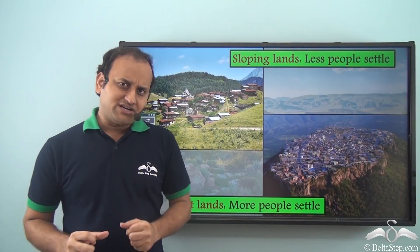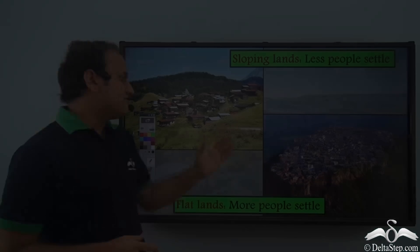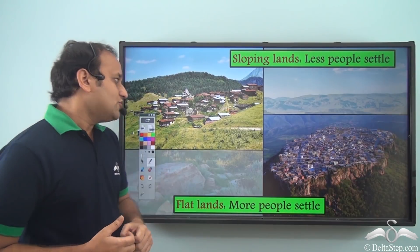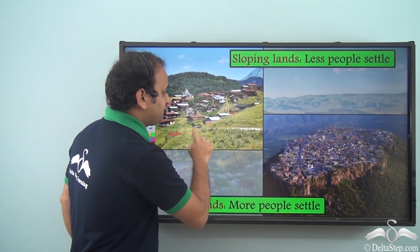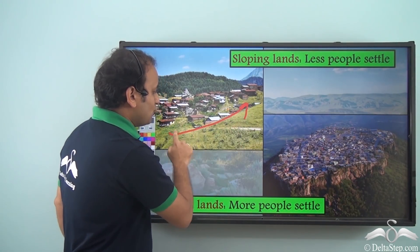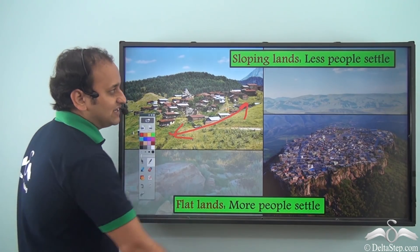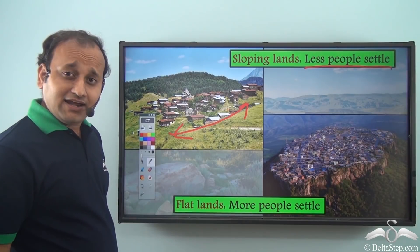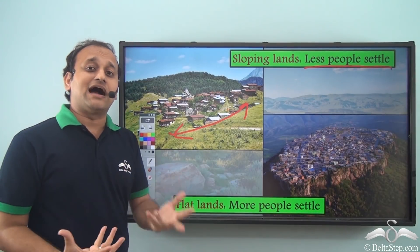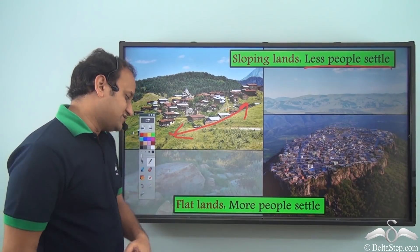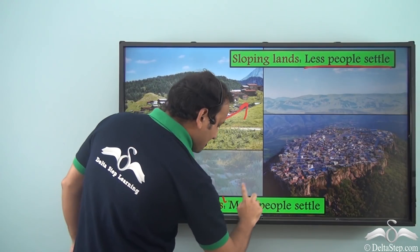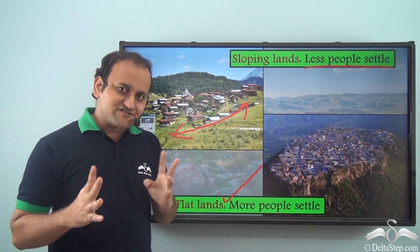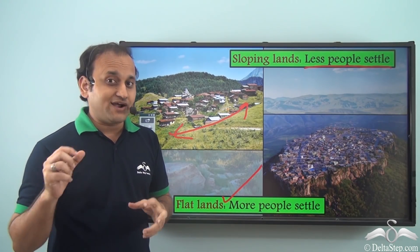Whenever you have sloping land, like the slope of mountains, building houses is very difficult, so in sloping land usually fewer people settle. But when you have flat land, building houses is easier and as a result more people settle there. Even the highlands have some flat lands — let's understand what they are.